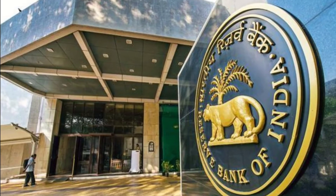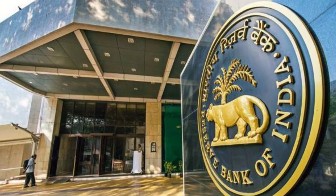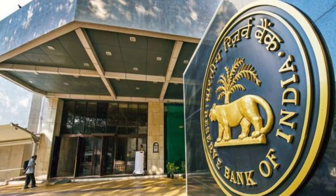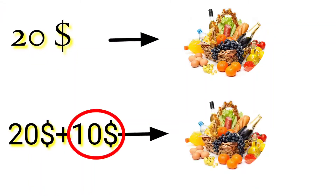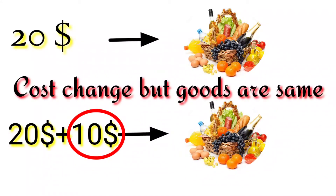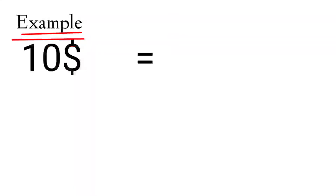Now, the central bank decides to give each person an additional one dollar, meaning there are now twenty-one dollar notes in the system. But the goods and services produced do not change. The additional money supplied cannot buy any more goods than those already present, so the exchange value of each good and service increases.